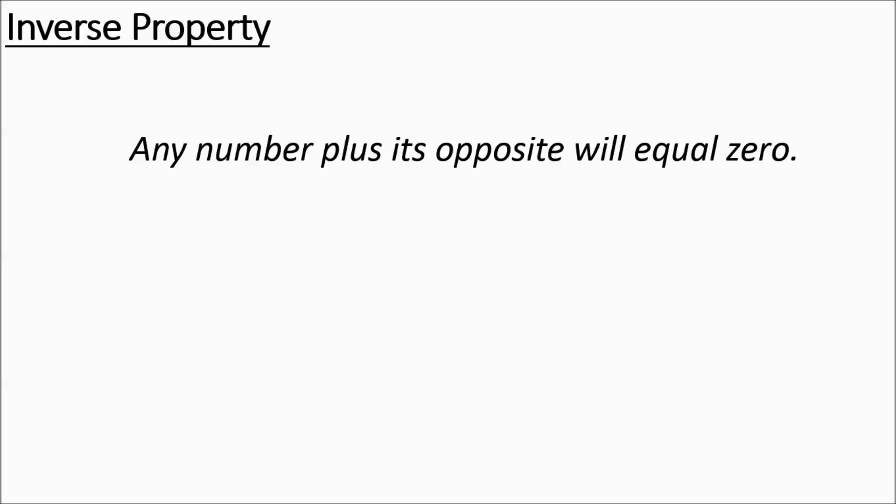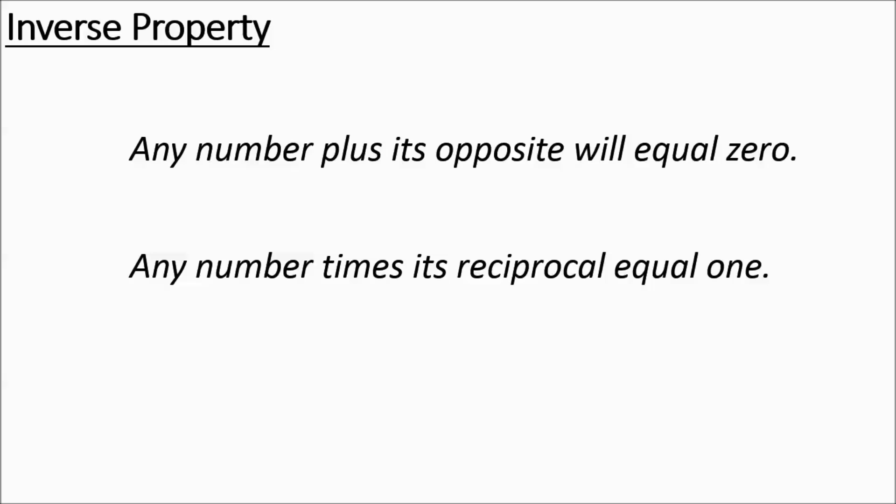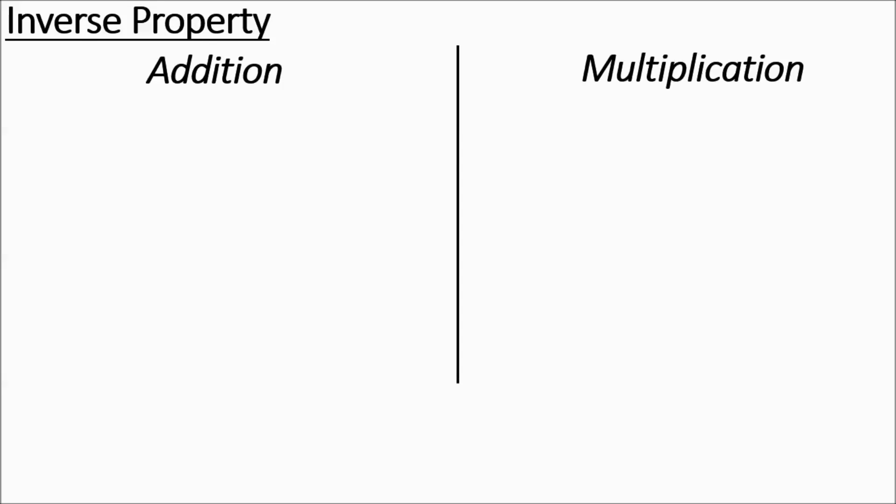We're going to move on now to the inverse property. Any number plus its opposite will equal 0. Any number times its reciprocal will equal 1. A lot of kids get inverse confused with identity. The thing to realize is inverse — you end up with 0 and you end up with 1 — whereas with identity, those values were involved with the operations.